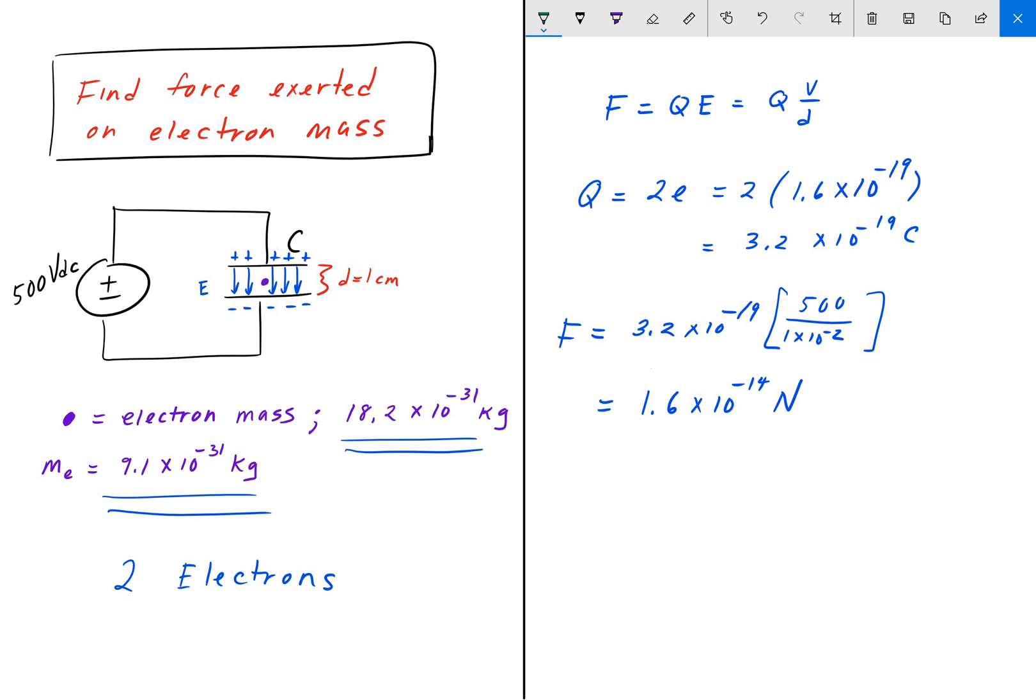That is the answer there. So that electron mass in between those two parallel plates experiences a force of 1.6 times 10 to the negative 14 newtons in the direction shown by these blue arrows here.